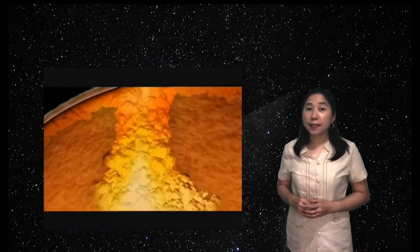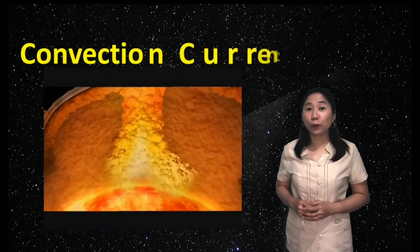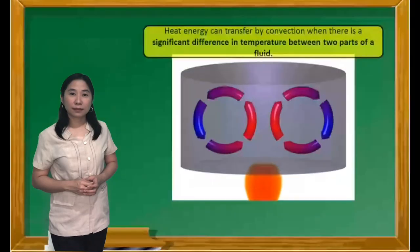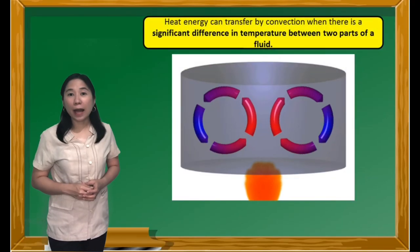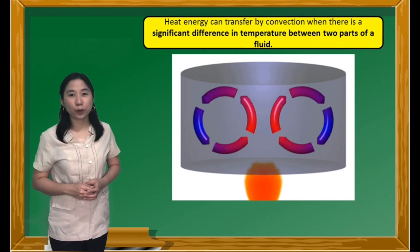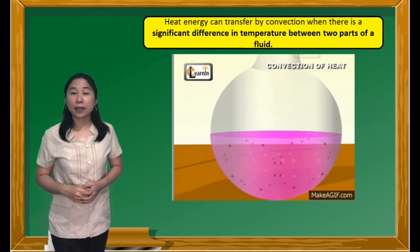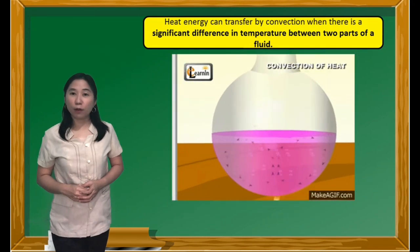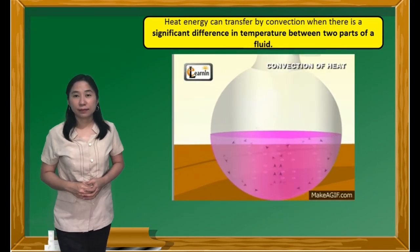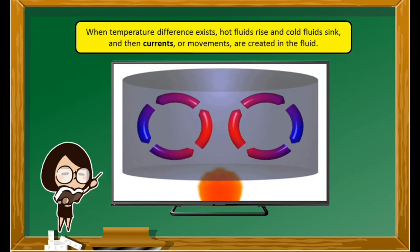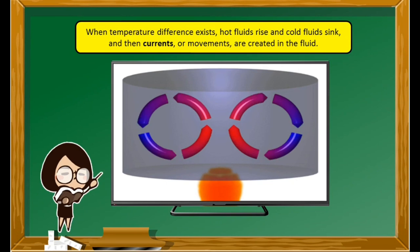Plate tectonics is made possible by the process of what we call convection current at the Earth's mantle. Convection is a process on how heat is being transferred in fluids. Convection can happen if there is a significant difference in temperature between two parts of a fluid. When temperature difference exists, hot fluids rise and cold fluids sink, and then currents or movements are created in the fluid.